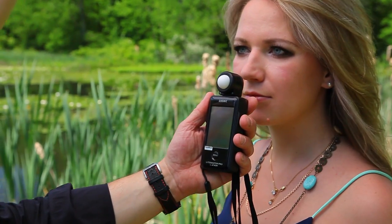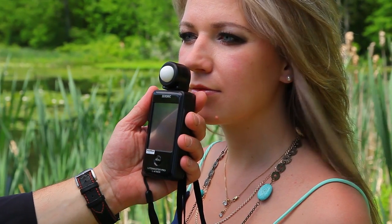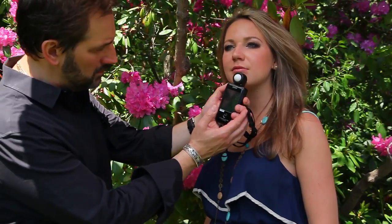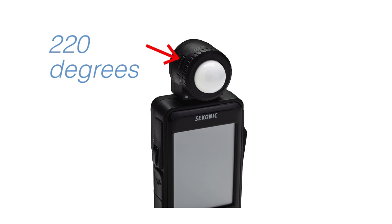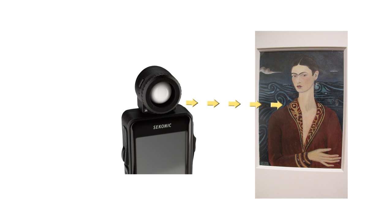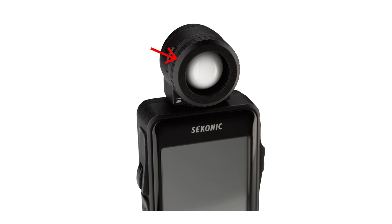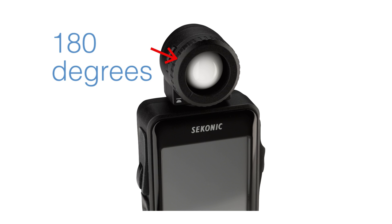Incident mode is ideal for shooting situations when we can get close to our subject and measure the light as it falls on the subject. If you're shooting a portrait or three-dimensional object, the lumisphere should be in the upright position — it will measure 220 degrees of light falling on the subject, which is especially important because it measures light wrapping around the subject. If you're measuring a two-dimensional subject, you can reposition the lumisphere to the retracted position and the L478 will only measure 180 degrees of the light.